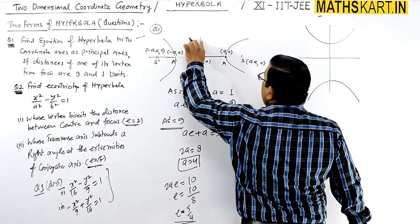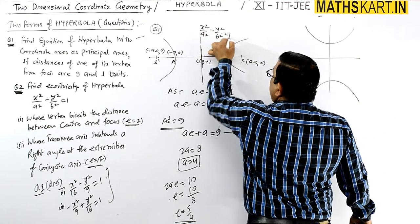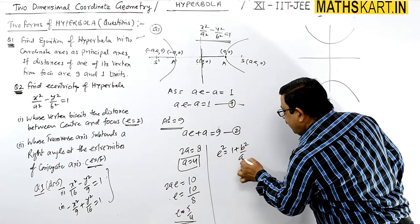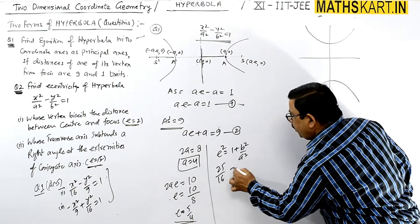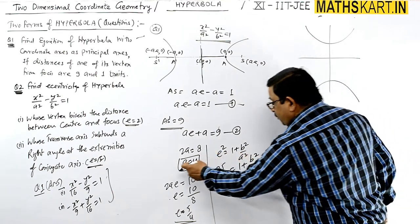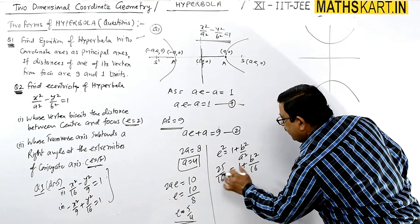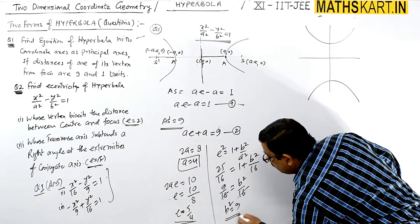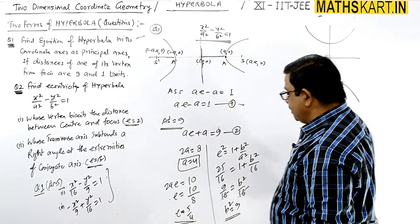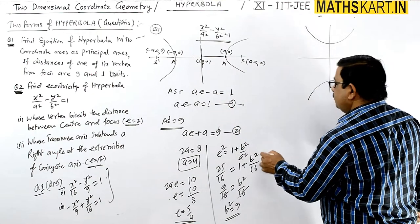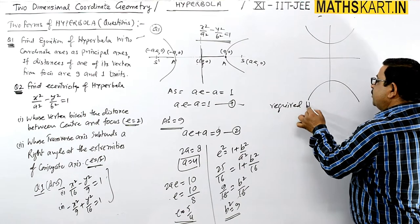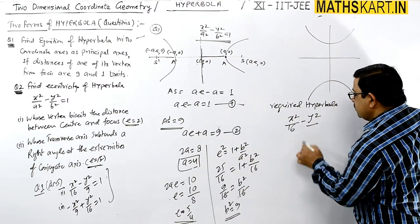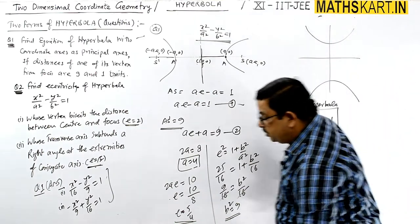Since eccentricity e = 5/4 and a = 4, using e² = 1 + b²/a²: 25/16 = 1 + b²/16, giving b² = 9. Therefore the required hyperbola for Case 1 (transverse) is x²/16 - y²/9 = 1.